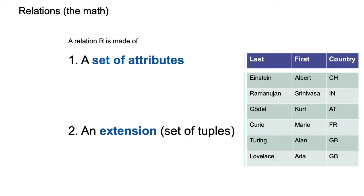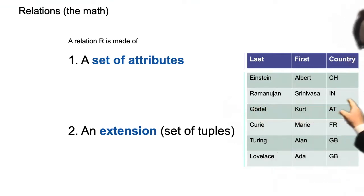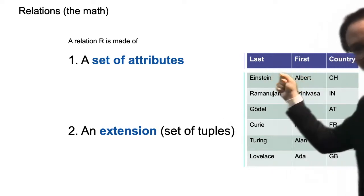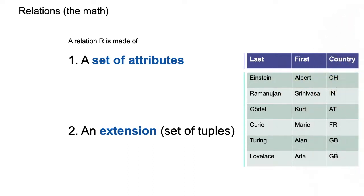A bag is the same thing as a set, but you can have repetition — multiple times the same element. With a list, you also have order on top of that — it's basically a finite sequence. And a map, for mathematicians, would be known as a partial function: a function that might not be defined everywhere, so the domain of definition might not match the entire domain. Computer scientists call this a map or an associative array. Every tuple — also called a record, row, or map — associates each attribute to a value. So the first row is a map that associates 'last' with Einstein, 'first' with Albert, and 'country' with CH.